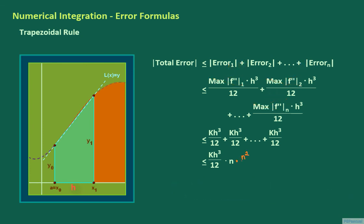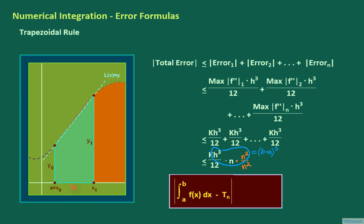We multiply the right side of the inequality by n squared over n squared, which is equal to 1, and then take advantage of the fact that h equals b minus a all over n, or that h times n equals b minus a. So h cubed times n cubed is equal to the cube of b minus a. And finally, the absolute value of the total error — which is equal to the absolute value of the integral of f from a to b minus the approximation using the trapezoidal rule with n equal subintervals, denoted by capital T sub n — is less than or equal to K times the cube of b minus a, all over 12 n squared.